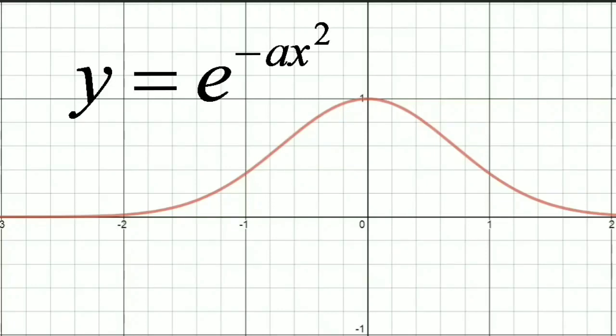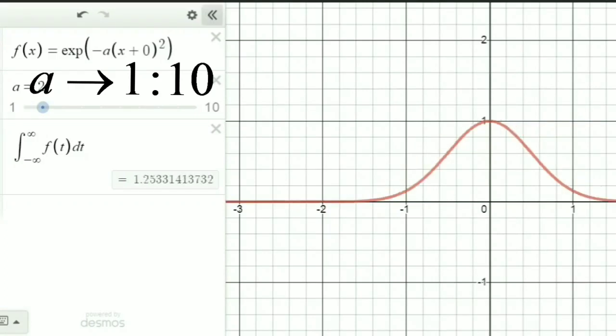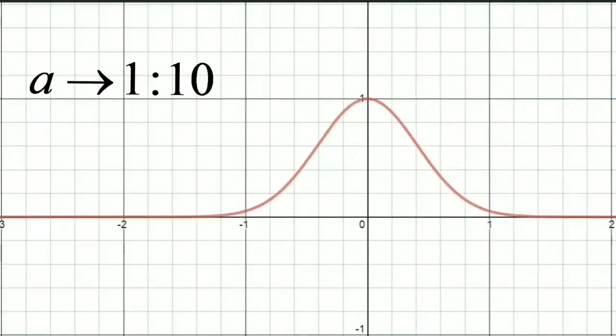Let us visualize what happens if we change the variables associated with the Gaussian function, y equal to e raised to minus ax square. Now I am going to increase the value of a from 1 to 10. Here we can see that when the value of a is increased, the width of the Gaussian curve is narrowed. If the value of a is decreased, the Gaussian curve becomes wider and wider.